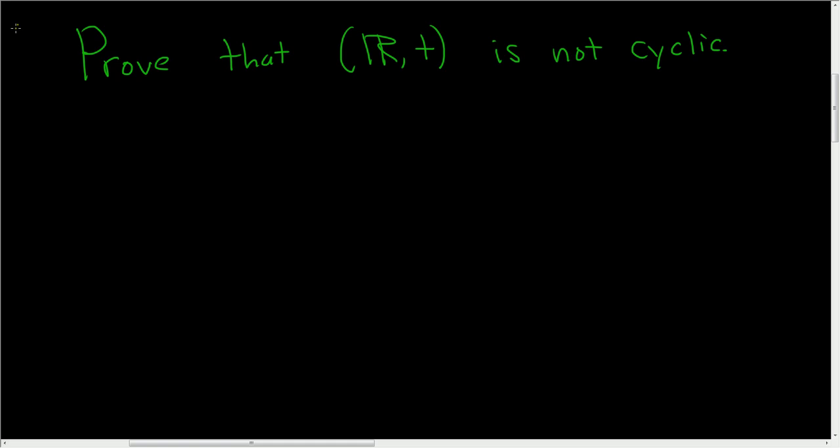We're being asked to prove that the real numbers under the operation of addition is not a cyclic group, so proof. This is more of an observation, but let's go through it carefully. To do this, we'll use a proof by contradiction. So suppose that the real numbers under the binary operation of addition is cyclic. Suppose it is a cyclic group.